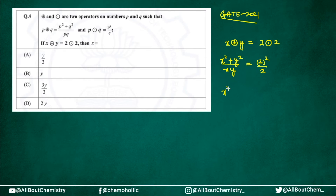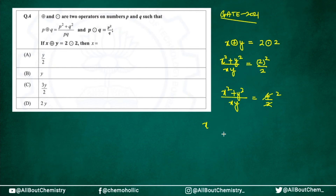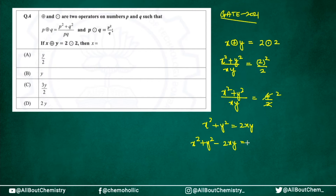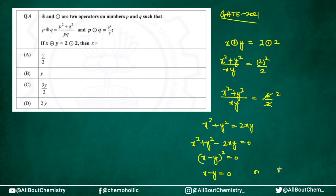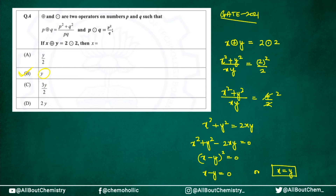So we have (x² + y²) / (xy) = 4/2 = 2. Cross-multiplying gives x² + y² = 2xy, which rearranges to x² + y² − 2xy = 0. This is the identity (x − y)² = 0, so x − y = 0, meaning x = y. That's option number B. You just used basic algebraic expressions and identities and solved it in under 20 seconds.